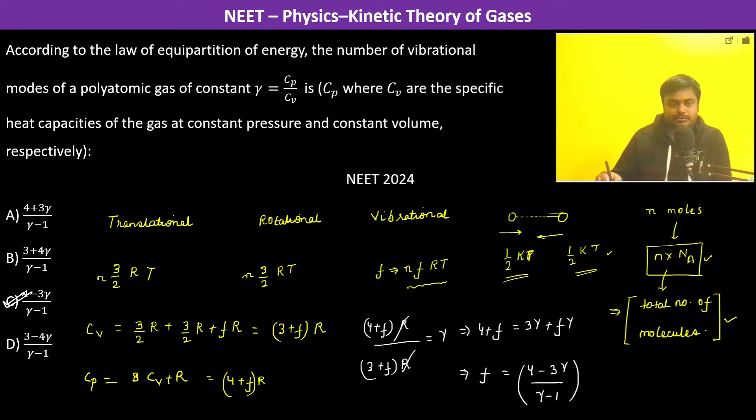We will just repeat. We started with the translational kinetic energy, the rotational kinetic energy, and the vibrational kinetic energy. The degree of freedom in translational kinetic energy is 3, in rotational again it is 3, and in vibrational it is F. Each degree of freedom has half K T energy associated with it whether it is translational or rotational.